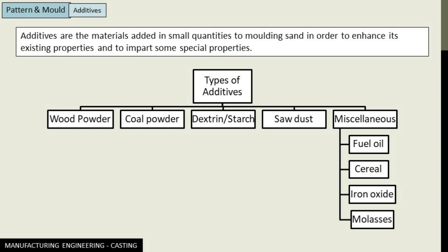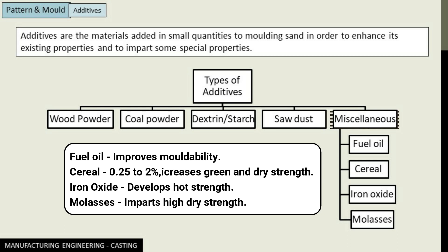The next kind of additives are miscellaneous additives. First, we have fuel oil, which improves the moldability of sand. Then we have foundry cereal, which is actually a finely ground cornflour or cornstarch. In a composition of 0.25 to 2%, it increases the green and dry strength of the molding sand. When we study the properties of molding sand, you will come to understand green and dry strength.